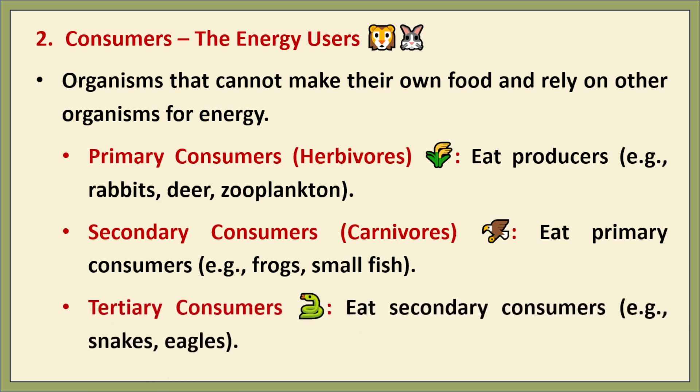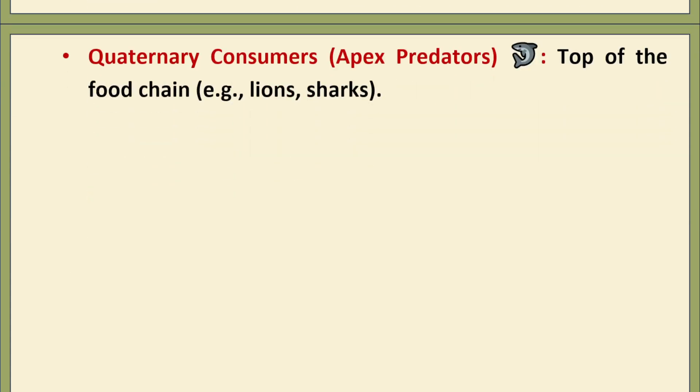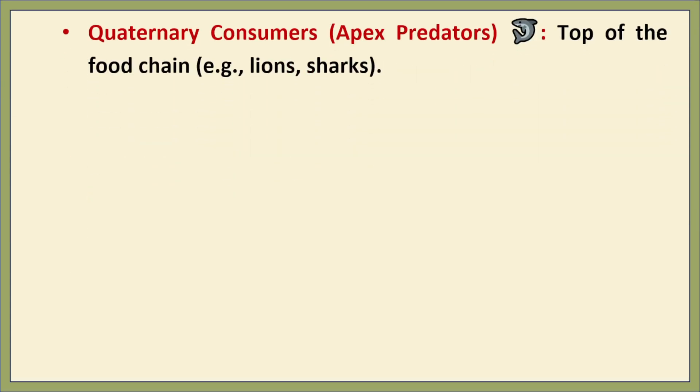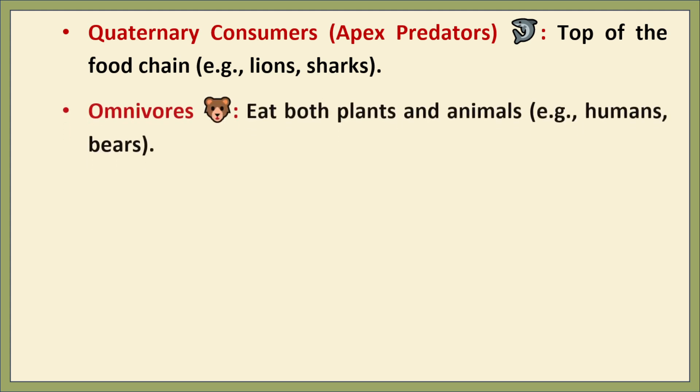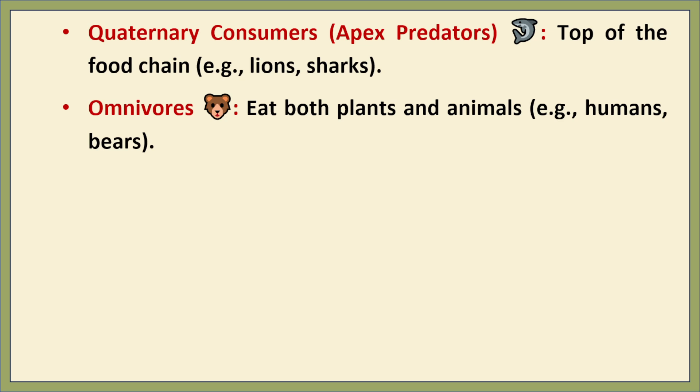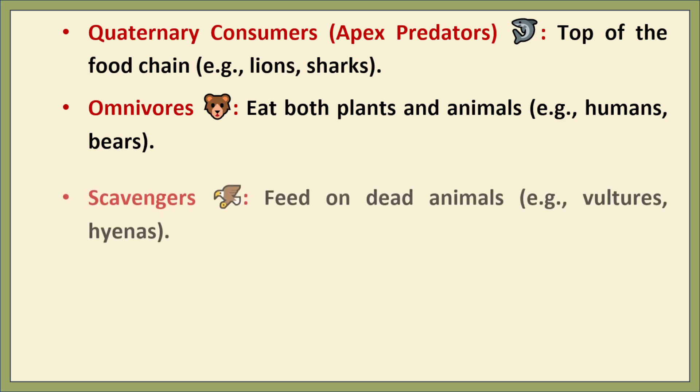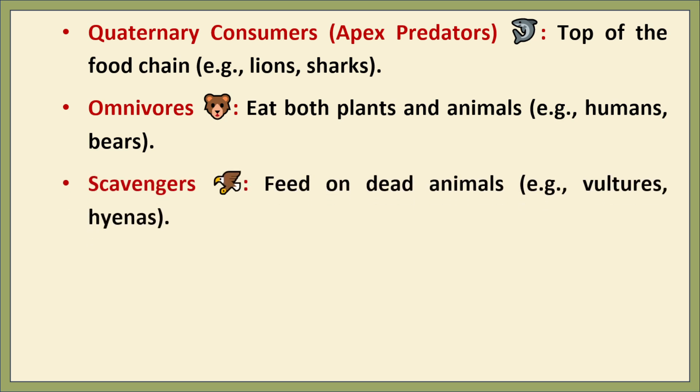Tertiary consumers feed on secondary consumers; examples include snakes, large fish, and eagles. Quaternary consumers, also known as apex predators, are at the top of the food chain — examples are lions, sharks, humans, and hawks. Omnivores feed on both plants and animals, such as bears, humans, and raccoons. Scavengers feed on dead animals, like vultures and hyenas.